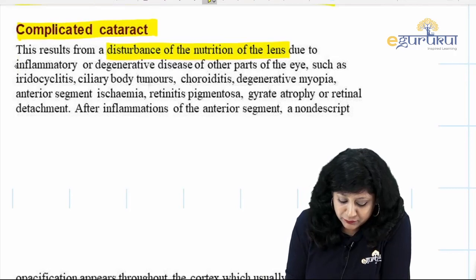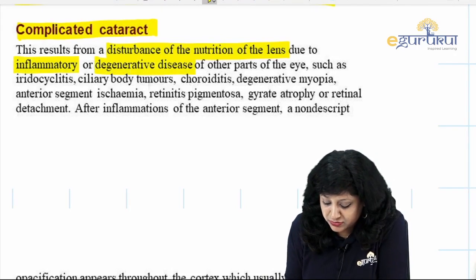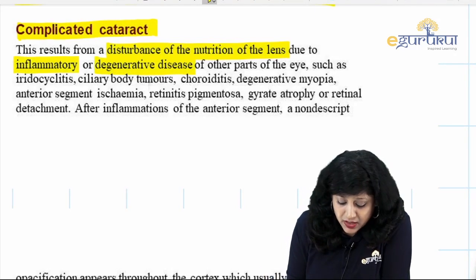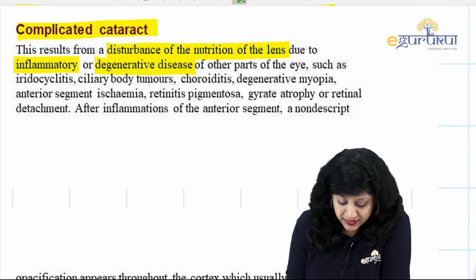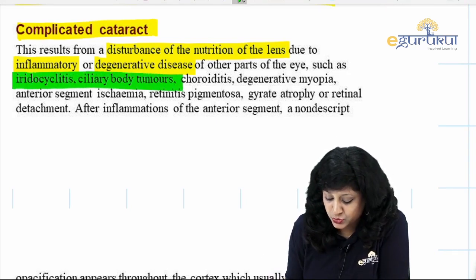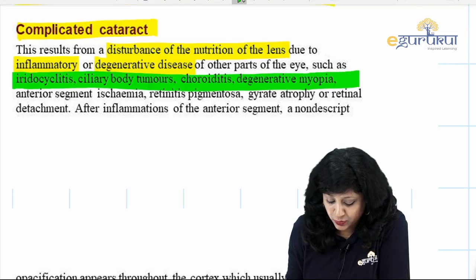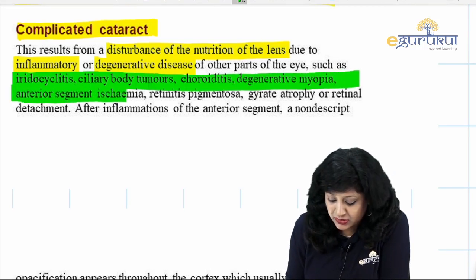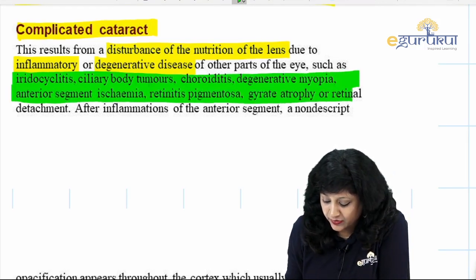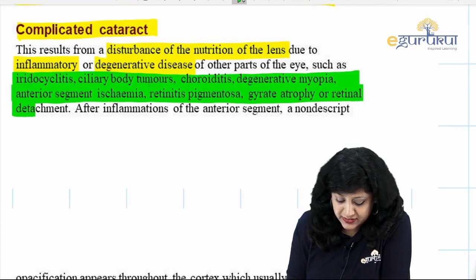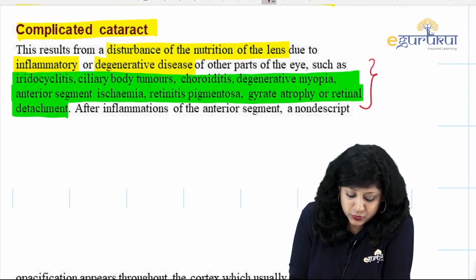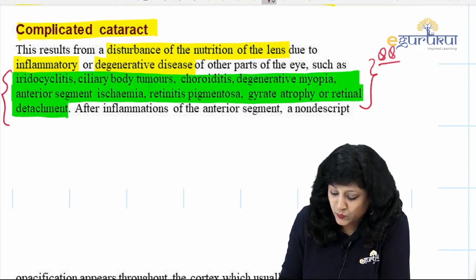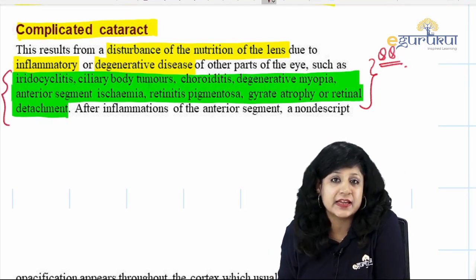Complicated cataract can be due to inflammatory diseases or degenerative diseases. Looking at the different etiologies, we can have iridocyclitis, ciliary body tumors, choroiditis, degenerative myopia, anterior segment ischemia, retinitis pigmentosa, gyrate atrophy, as well as retinal detachment. There are many diseases where you can expect a complicated cataract.